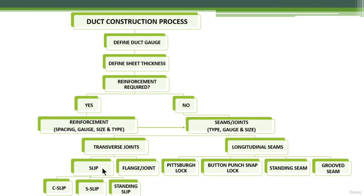The slip type consists of three further types: C-slip, S-slip, and standing slip — named based on their shape. The flange joint type uses flanges and gaskets to prevent leakage. These are the most commonly used transverse joints, and in approximately 70 to 80 percent of projects you will use either the C-slip or S-slip.